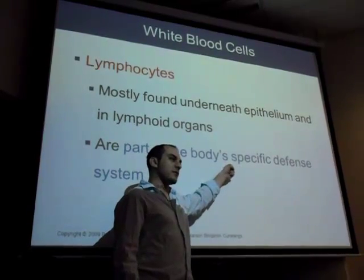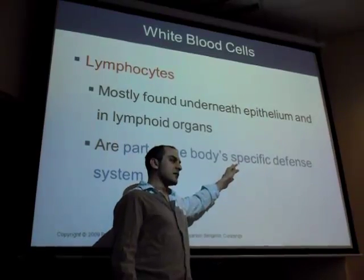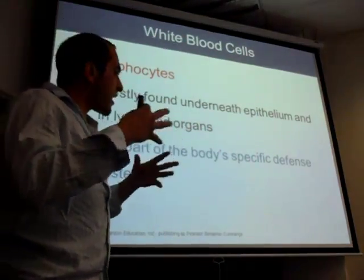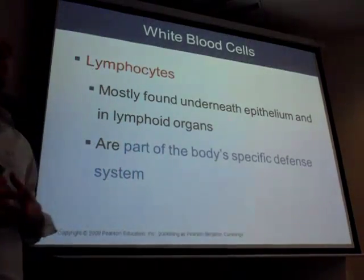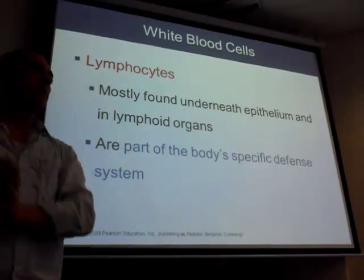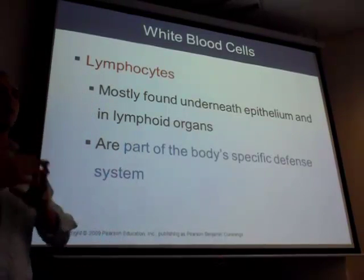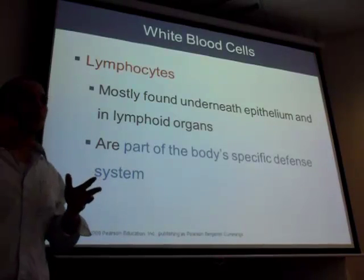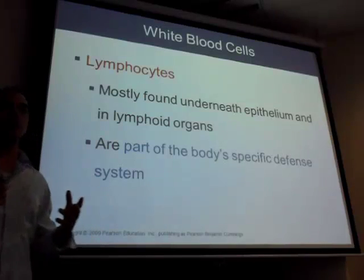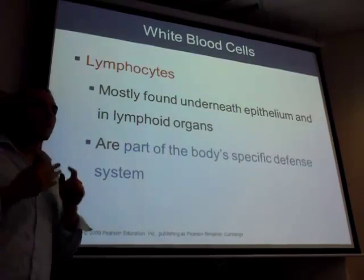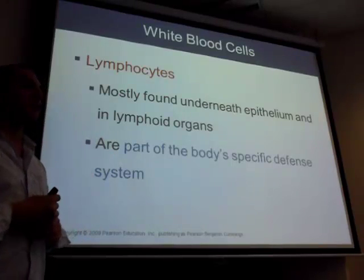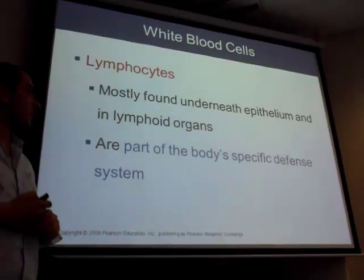Is it innate or adaptive? It's adaptive. Another word for specific immune system is adaptive, because the cell adapts to the different pathogen it needs to attack. Innate is another word for non-specific. Lymphocytes make three different types. There are actually four letters you see: T cells, B cells, and NK cells. Two of them — B and T — are specific/adaptive.